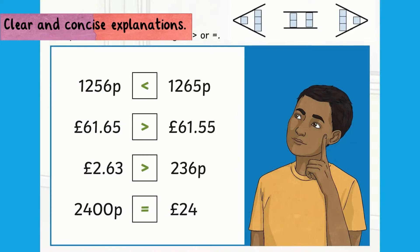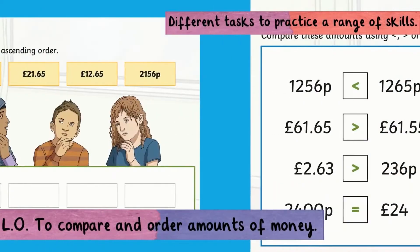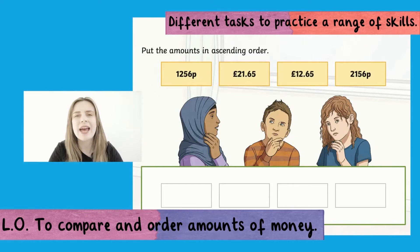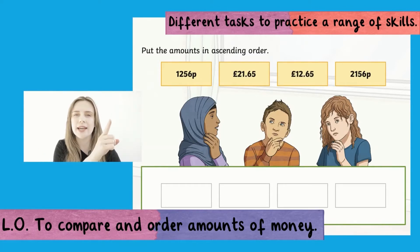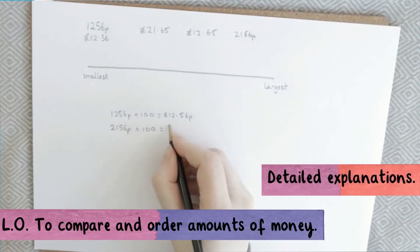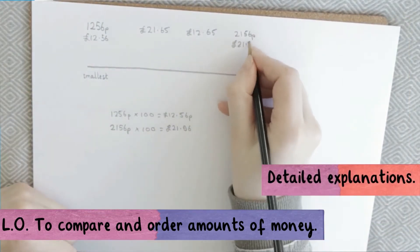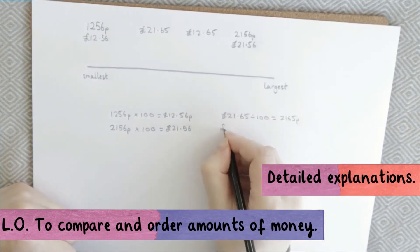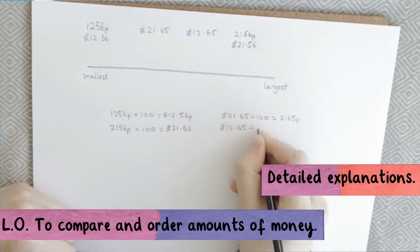Did you convert the amounts from pounds to pence or pence to pounds? Looking at the amounts of money on screen, I would like you to put them in ascending order. Ascending means that it's gradually getting bigger. I decided to convert some of the amounts of money from pence to pounds to help me order the amounts in ascending order.